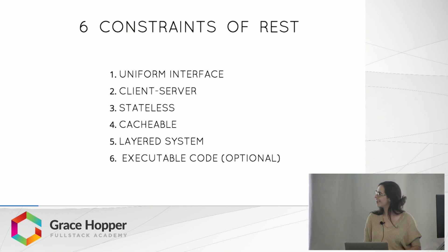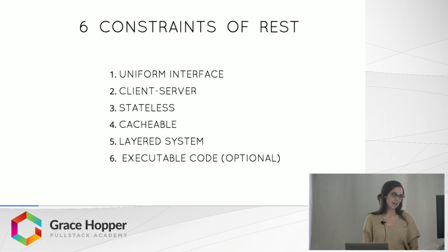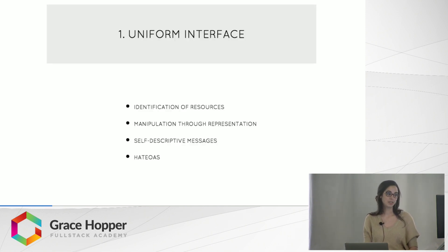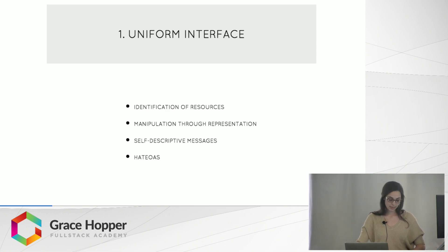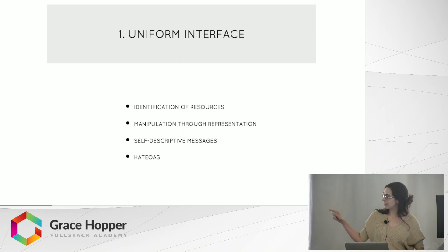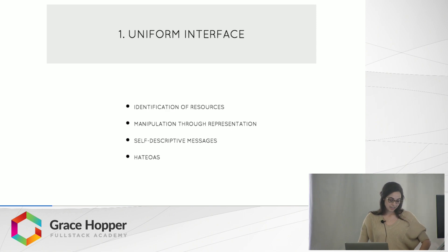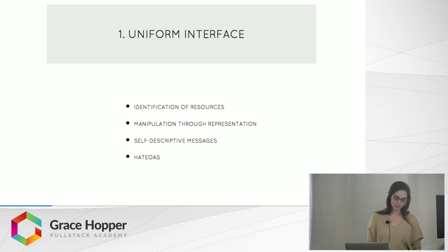Roy Fielding describes six constraints of REST. The first is uniform interface, which has four sub-constraints. Basically, when a system has identifiers for each resource, manipulates them through sending representations from client to server, and has messages composed of hypermedia, it is said to have a uniform interface. HATEOAS — Hypermedia as the Engine of Application State — is data from the server that contains information about what the client can do next, usually through links. So not that scary.